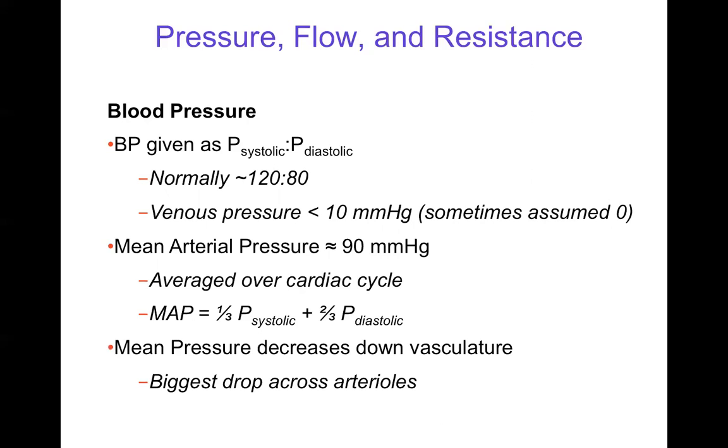Mean pressure does decrease going down the vasculature, down the arterial tree, because that's what drives the flow. The biggest drop in pressure going down the arterial tree is across the arterioles, which are the smallest arteries. They have the highest resistance.